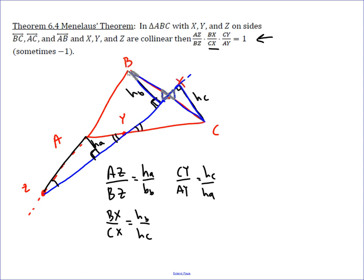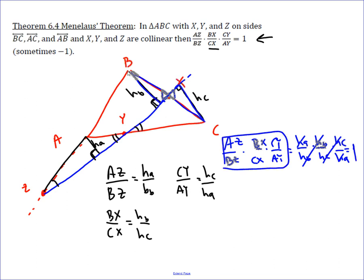If we multiply all of the fractions of sides together, we get AZ over BZ times BX over CX times CY over AY. Well, that's going to equal HA over HB and HB over HC and HC over HA. The C's cancel, the B's cancel, the A's cancel, which leads to just one, showing that this ratio is always going to be one, assuming those three points are collinear.